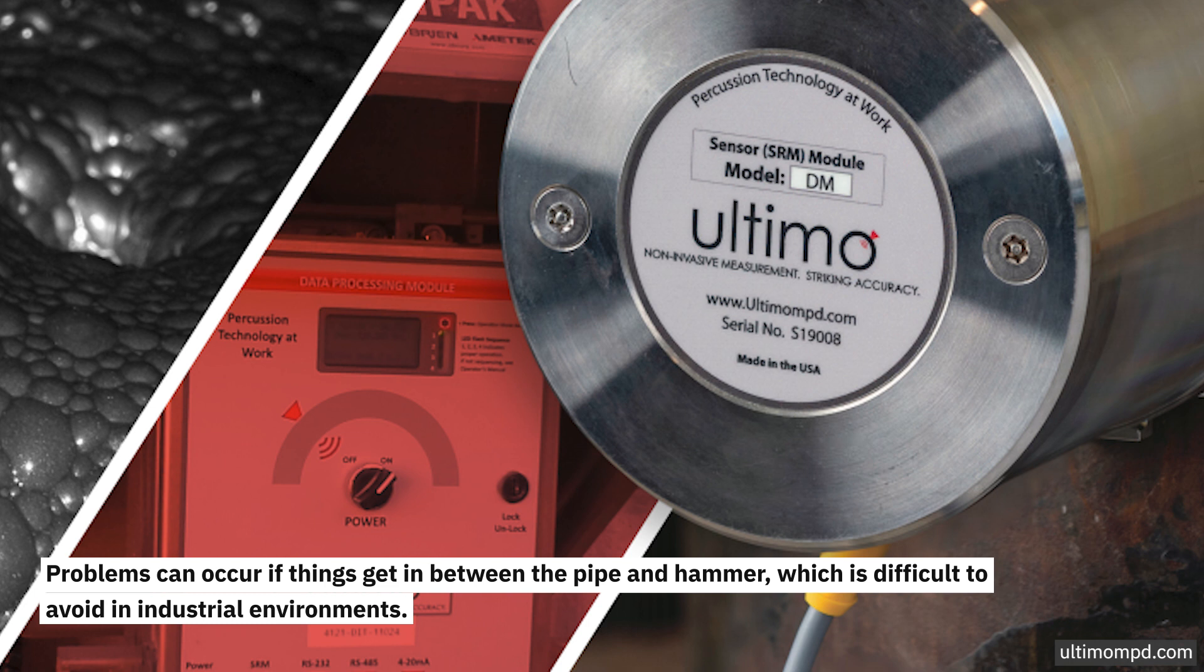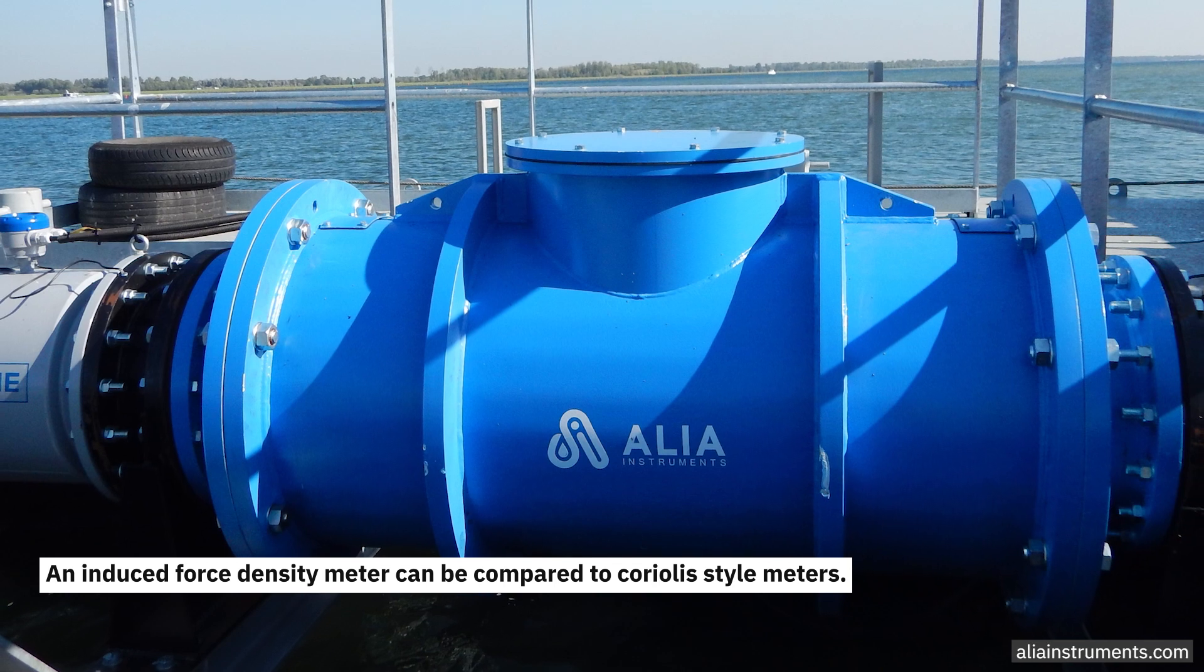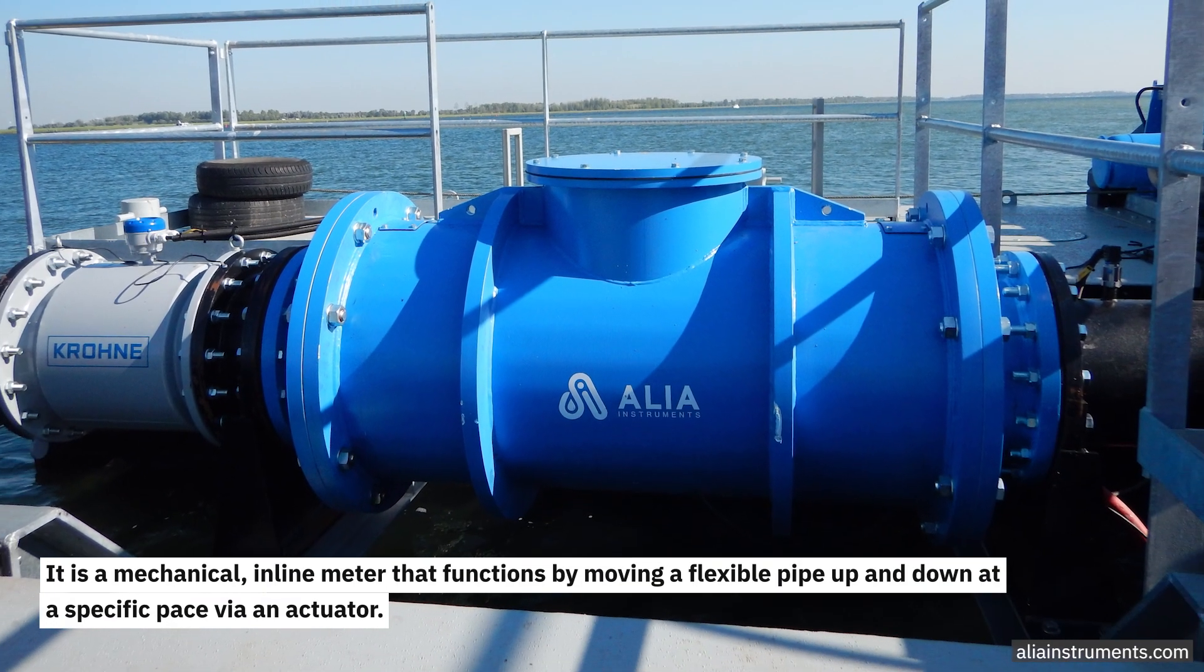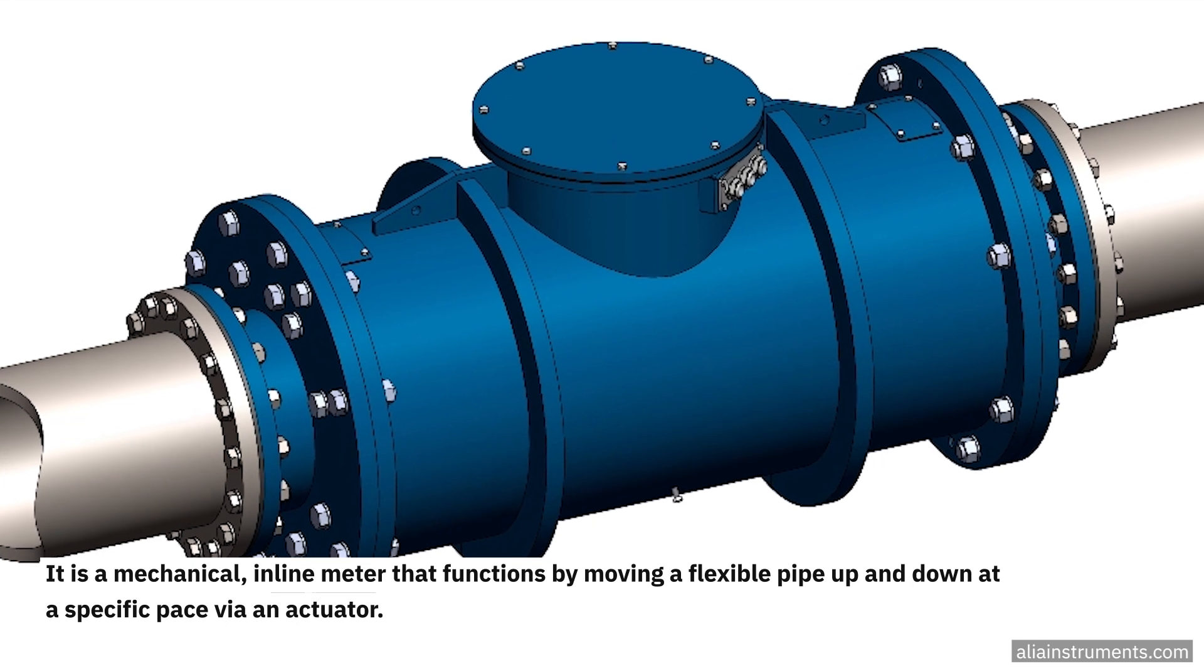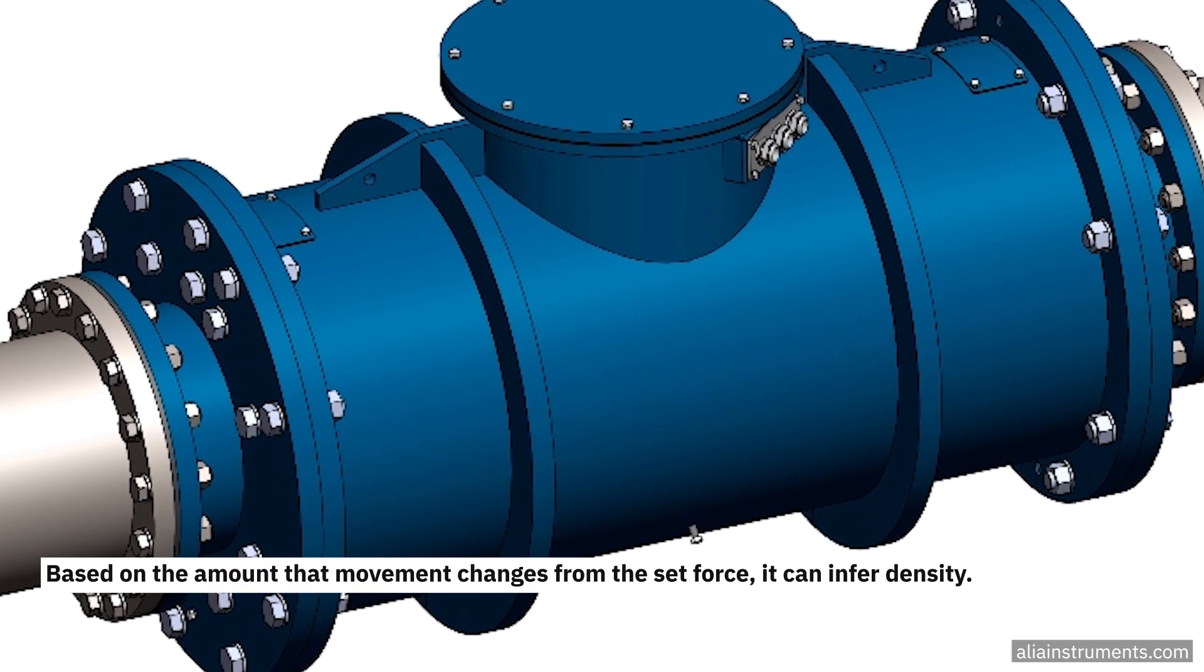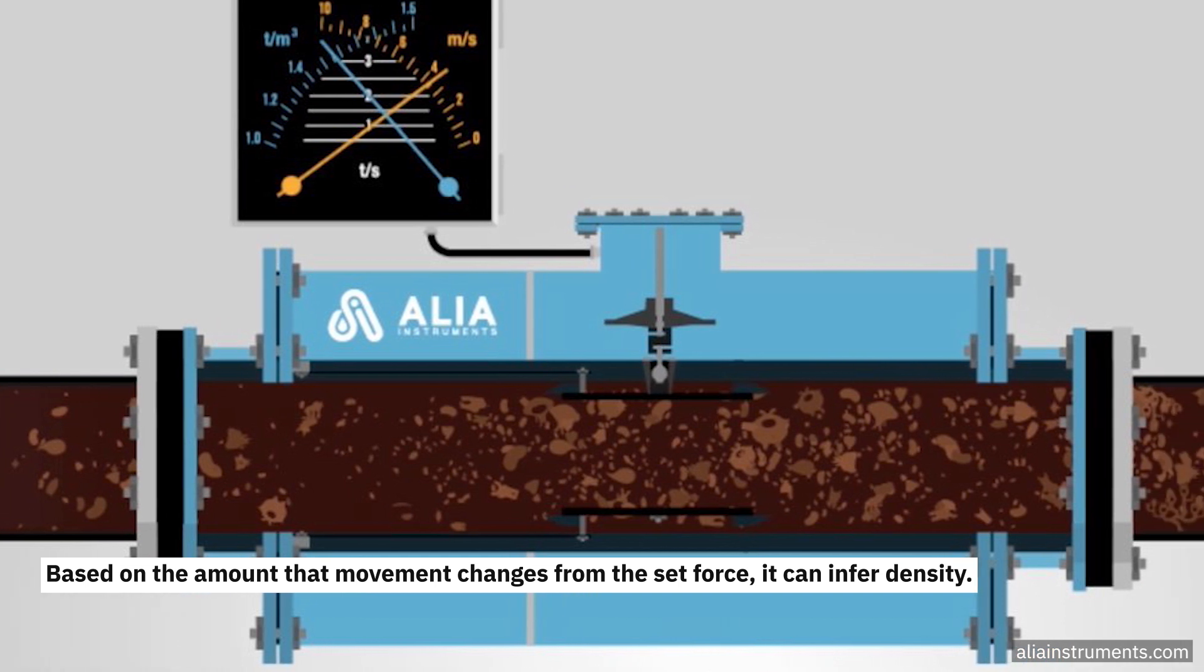An induced force density meter can be compared to Coriolis-style meters. It is a mechanical inline meter that functions by moving a flexible pipe up and down at a specific pace via an actuator. Based on the amount that movement changes from the set force, it can infer density.